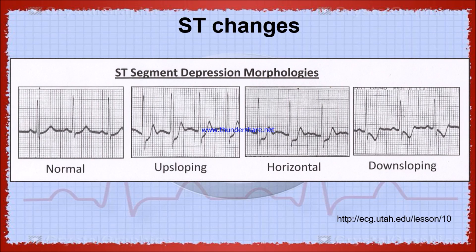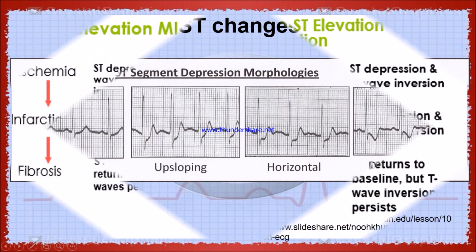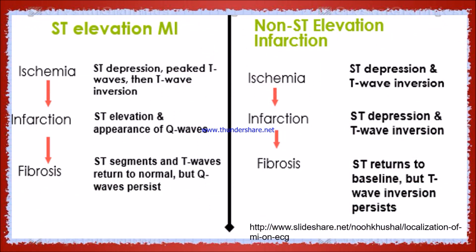Now we will talk about ST elevation myocardial infarction (STEMI). ST elevation will occur when there is a complete occlusion of a major coronary artery, or the patient has a history of atherosclerosis. There will always be full-thickness damage to the heart muscle. During ischemia, there will be lack of blood supply, ST depression, peaked T wave due to hyper-repolarization, and T wave inversion.